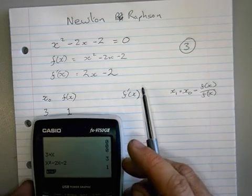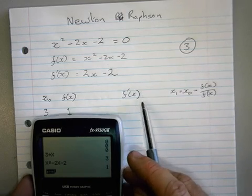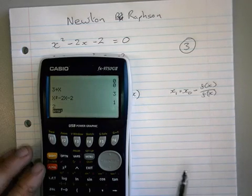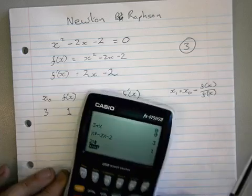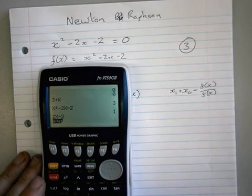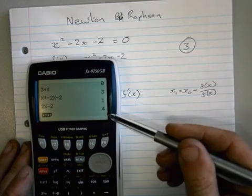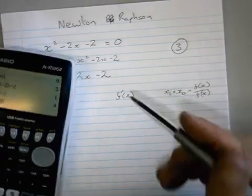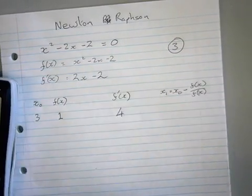Now I'm going to do exactly the same for this one. x hasn't changed, x is still 3. So I'm just going to type in 2x minus 2 and I get 4.